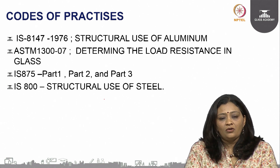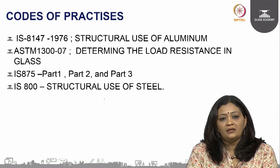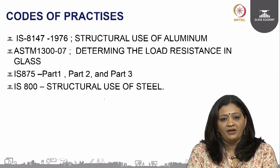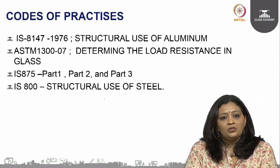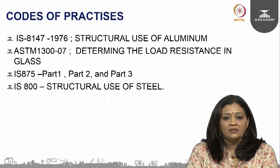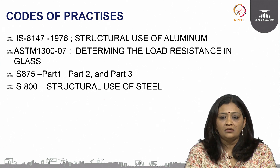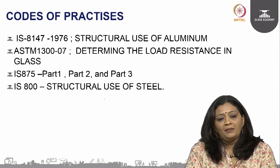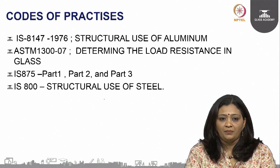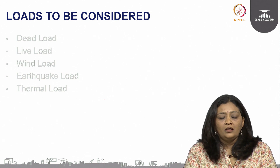The codes of practice commonly used in the facade industry include IS 875 Part 1, Part 2, and Part 3, which deal with dead load, live load, and wind load respectively. IS 8147:1976 is especially for the structural use of aluminium, ASTM 1300 determines load resistance in glass, and IS 800 is for the structural use of steel in facades — particularly for the design of brackets and other structural steel parts.